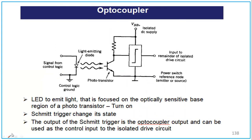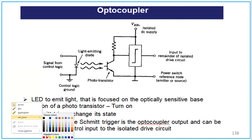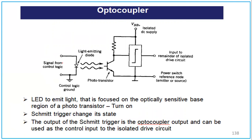For the optocoupler isolation method, a signal from logic control is fed to a light-emitting diode which emits light focused on the optically sensitive base of a phototransistor. This turns on the phototransistor, which in turn provides the gate pulse. A Schmitt trigger changes its state based on the optocoupler output, and that output is used as the control input to the isolated drive circuit, which has its own isolated DC supply.